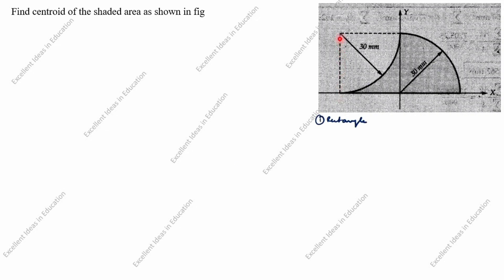First, we will take the shape as a rectangle. Second, we will take a quarter circle. Third, we will also take a quarter circle. The approach is: first one minus second one plus third one. You see this is the first one; second one you have to minus, and after that add the third one — we will get the centroid of the shaded area.